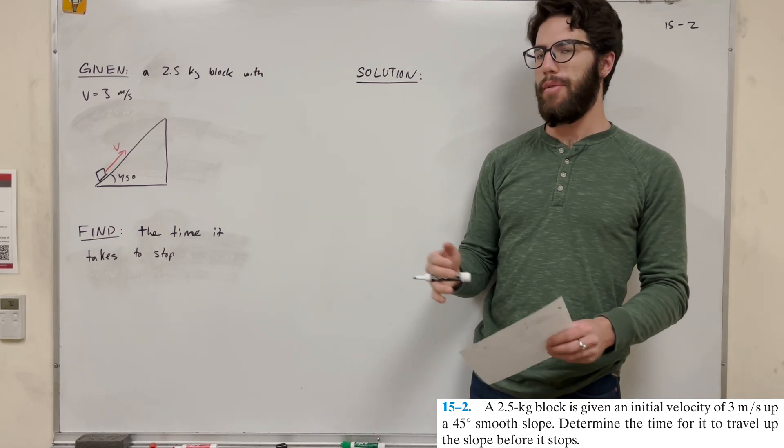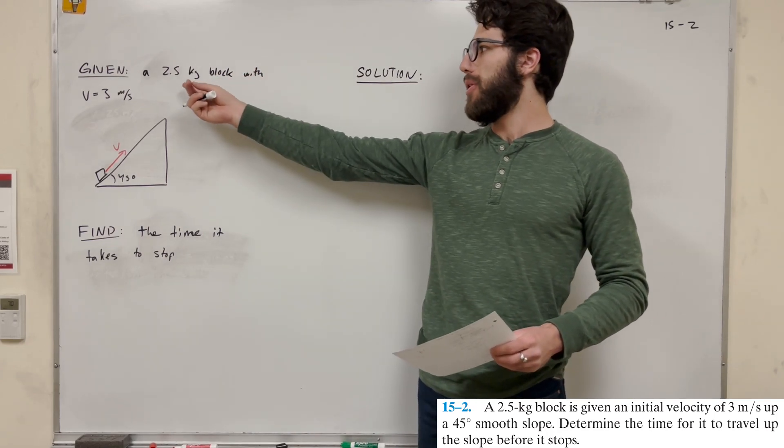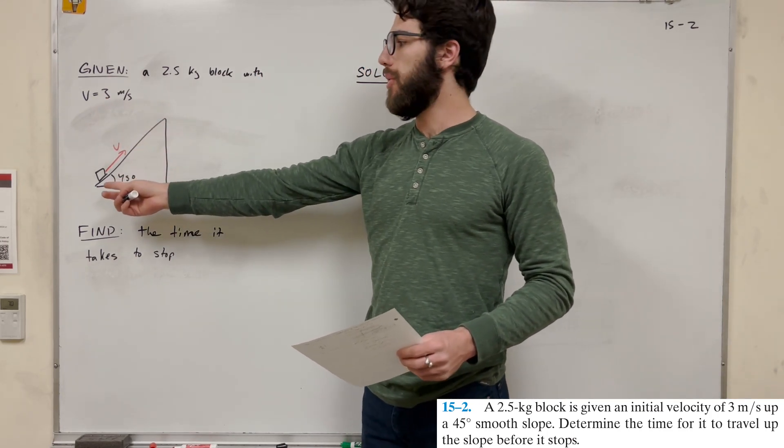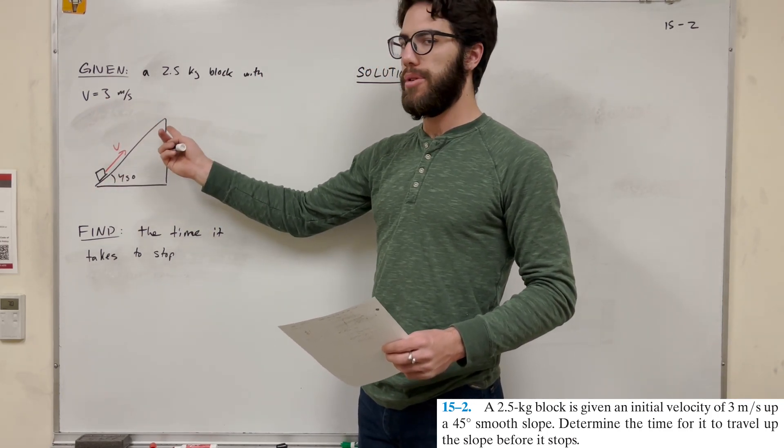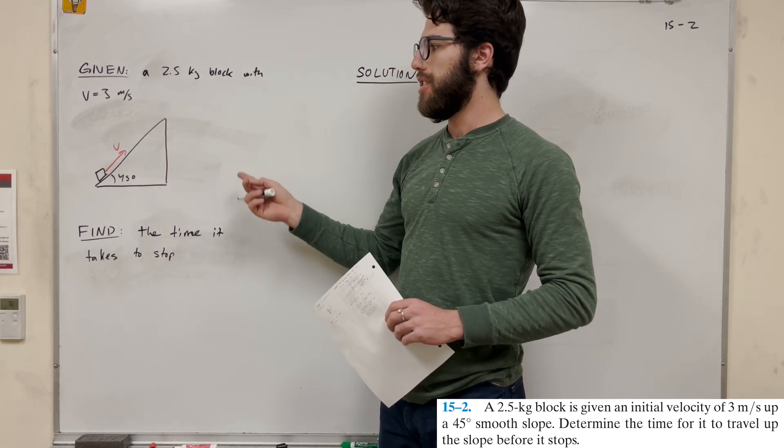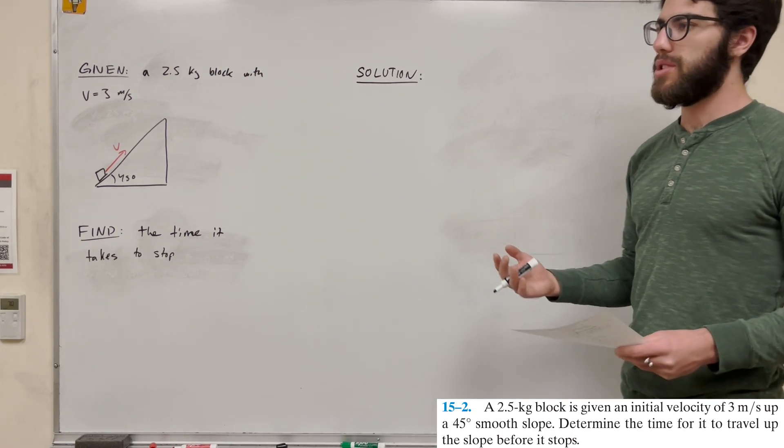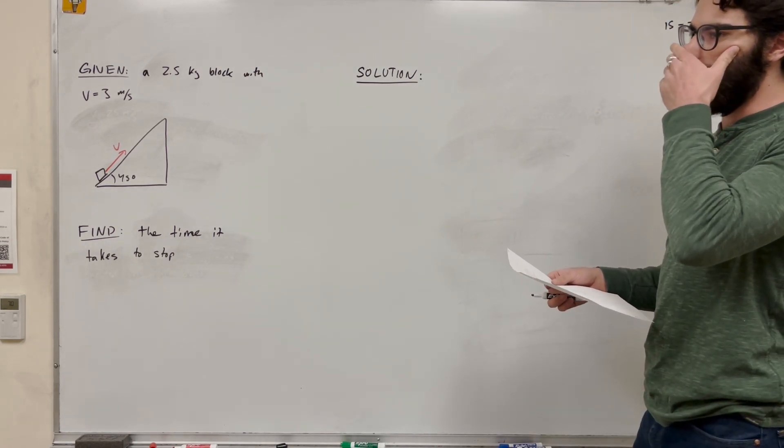What's up, Cal gang? Welcome back to some dynamics. Let's solve this problem. We have a 2.5 kilogram block with an initial velocity of 3 meters per second, and it's going up this 45 degree angle ramp. Our goal is to find the time it takes to stop. So this is all the information we're given, and it seems like not a lot, but we're using impulse so we can figure it out, and momentum and stuff like that.